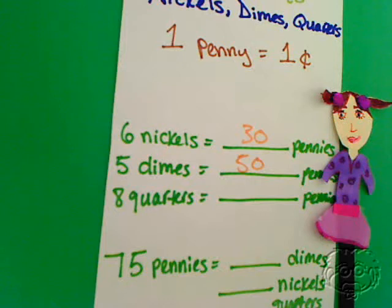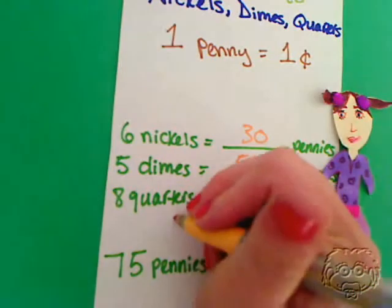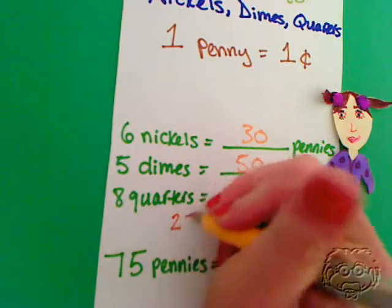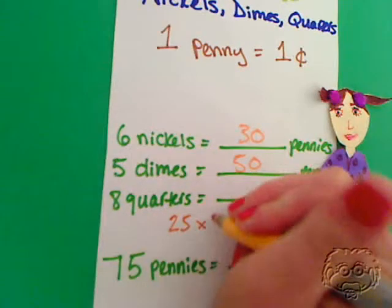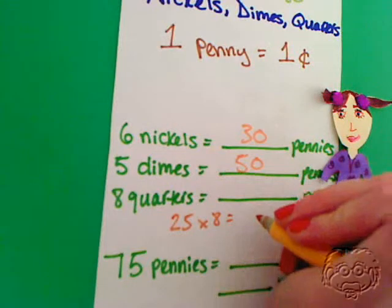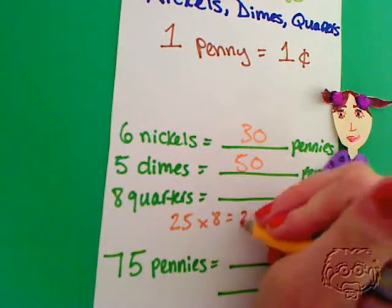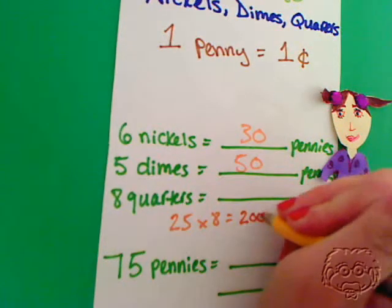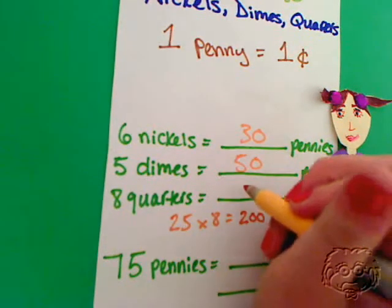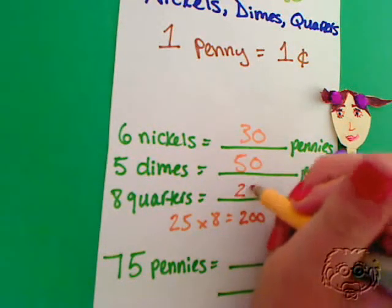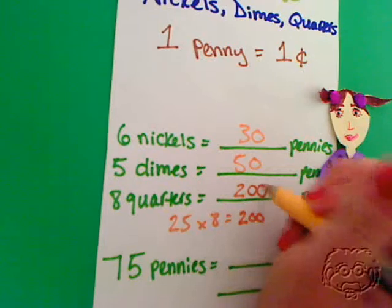Now for quarters — a quarter is worth 25 cents, or 25 pennies. So 8 times 25 — can you do the math? 8 times 25, or 25 times 8, is 200. So 8 quarters is worth 200 pennies.